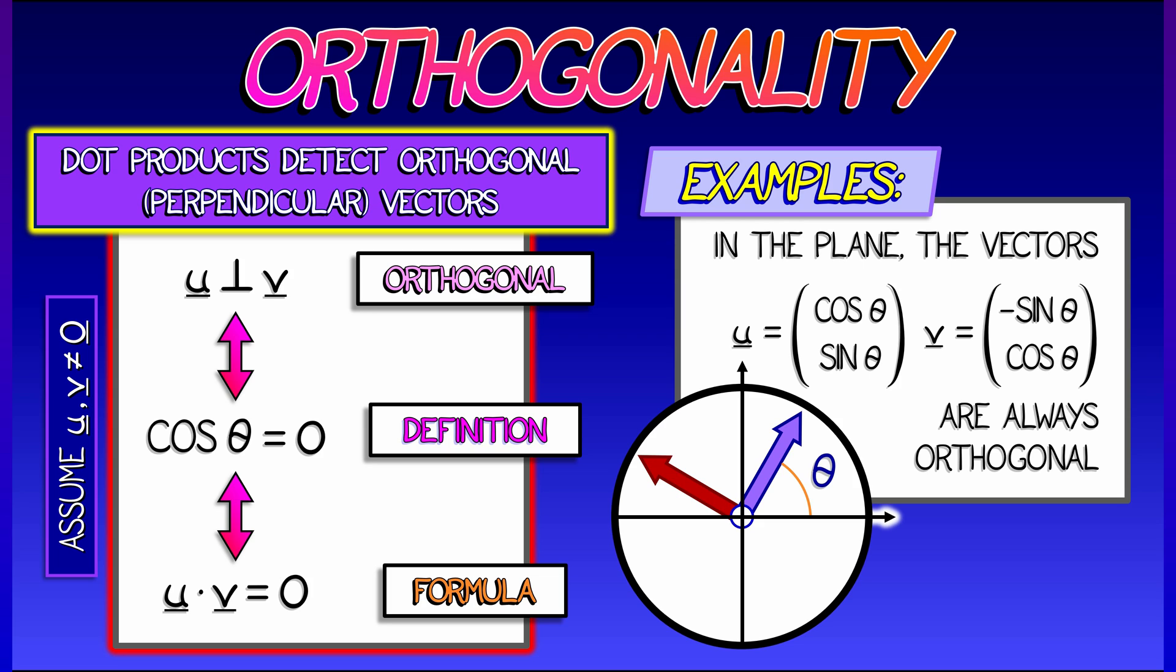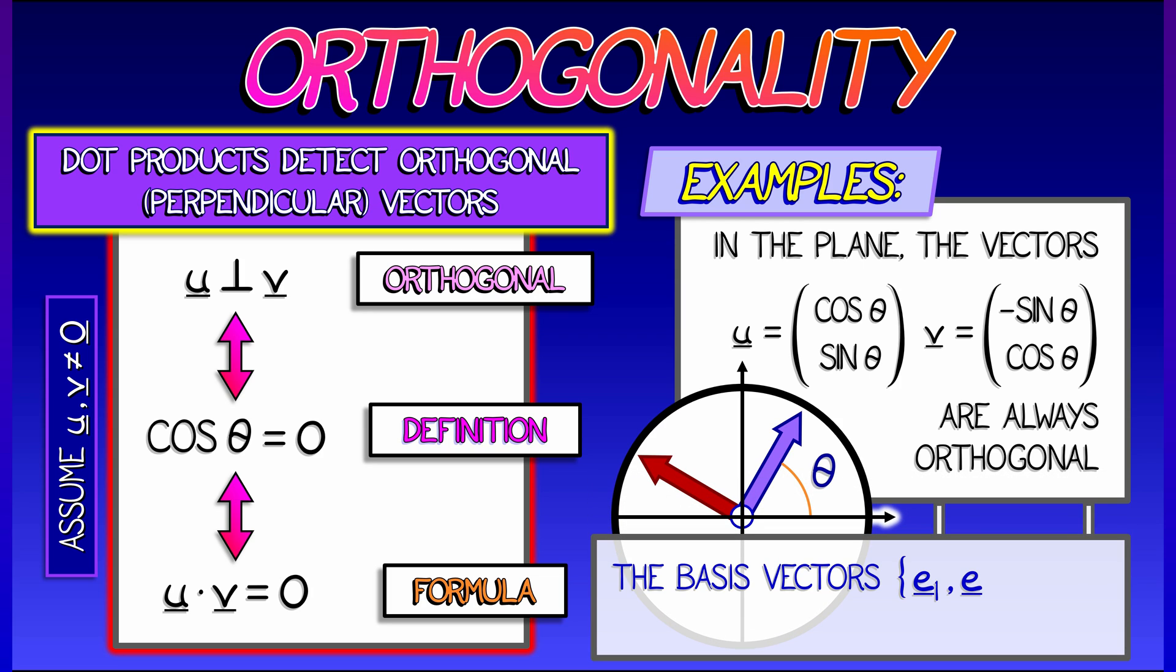Likewise, if you're in n-dimensional space and you look at the standard basis vectors, e1 up through en, these are mutually orthogonal. Each is orthogonal to all the others, as you can check by computing that the dot products are zero.